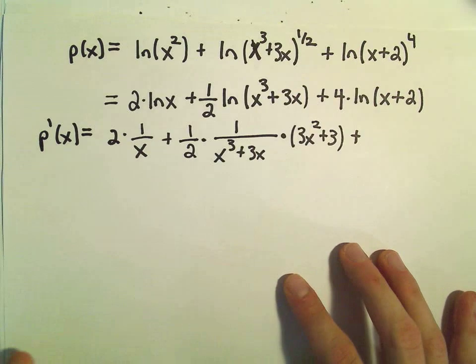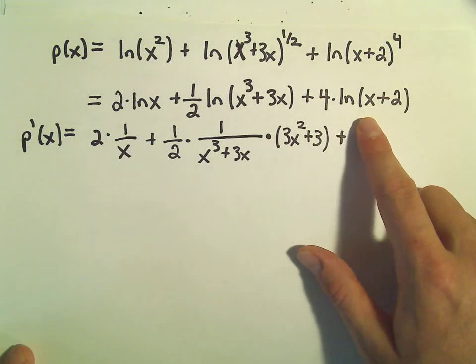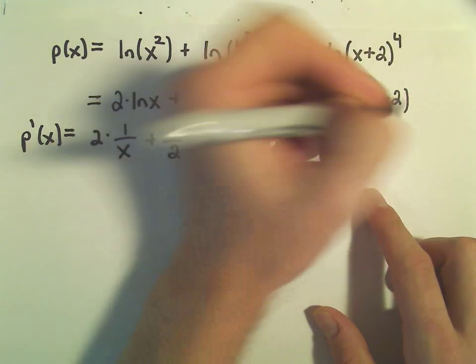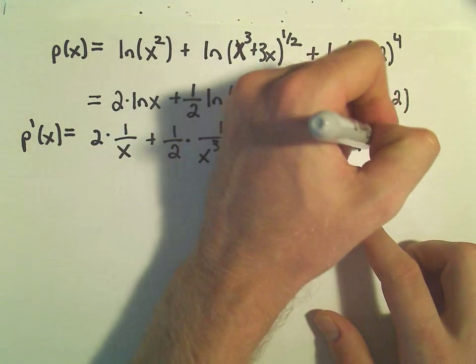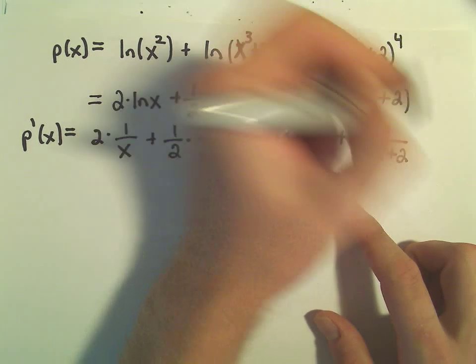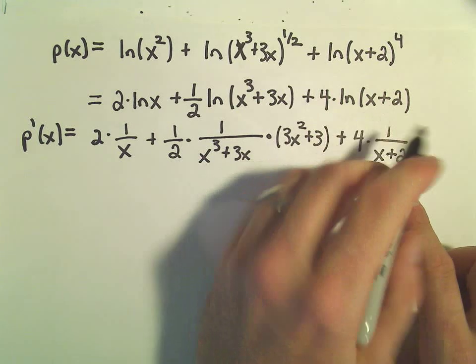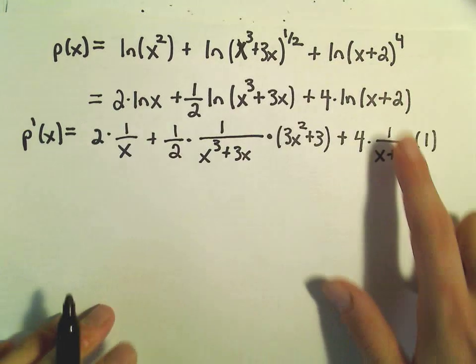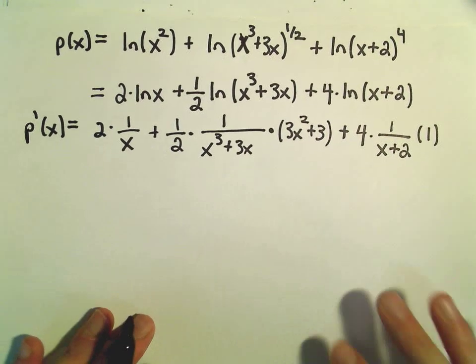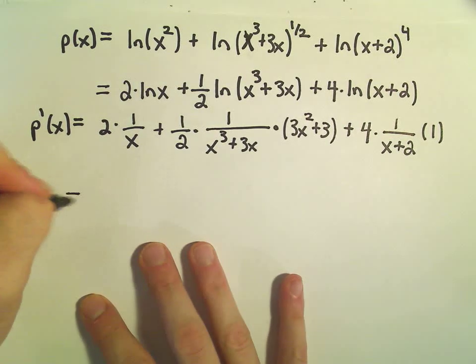And then the last thing we'll have to do is take the derivative of the 4 ln of x plus 2. So the 4 comes along, we'll get 1 over x plus 2. But when we take the derivative of the inside, the x plus 2, the 1x will just turn into a 1. The 2 will turn into a 0. And now we've got our derivative.